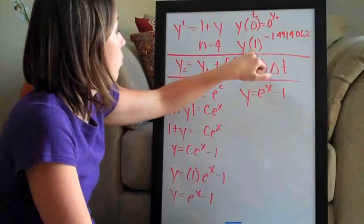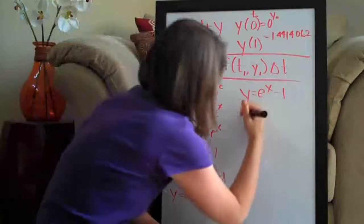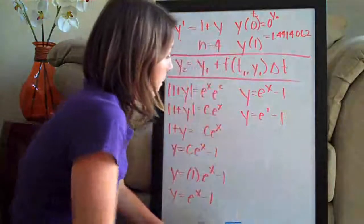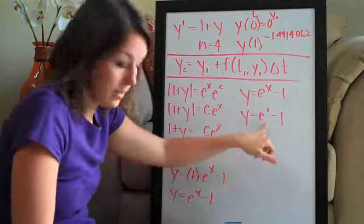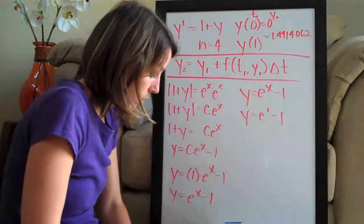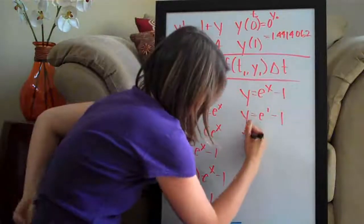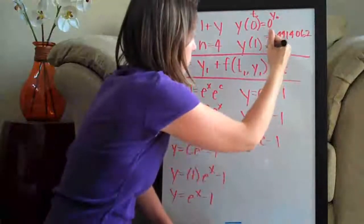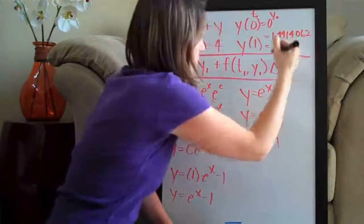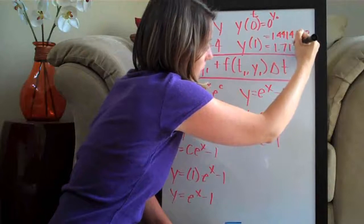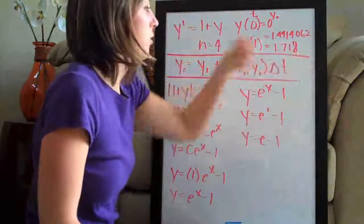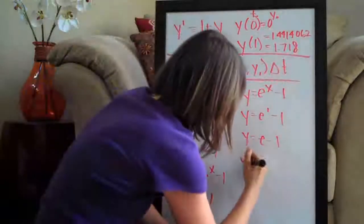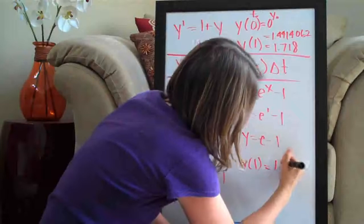We plug in 1 for x so we have y equals e to the 1 minus 1 and I went ahead and did this on my calculator ahead of time and you actually end up with, of course this is just y equals e minus 1 but y of 1 equals 1.718. There are some more decimal places but when you actually solve for y of 1 you get 1.718.